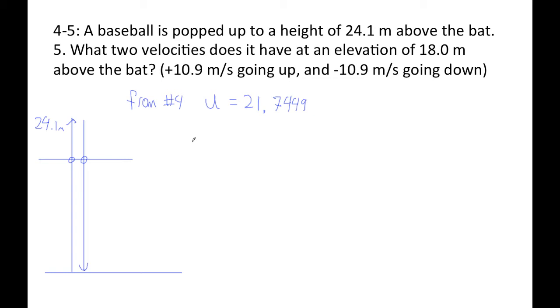And to find the velocity, I'm just going to do this. I'm going to go SUVAT, right? And I'm going to go ground to 18 meters. So 18 is my s. My initial is 21.7449. My final velocity is what I want. The acceleration is negative 9.81. And now I'm all set.